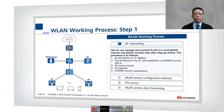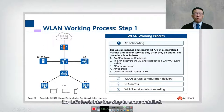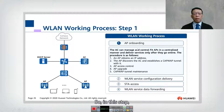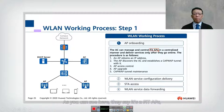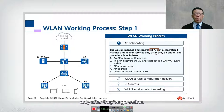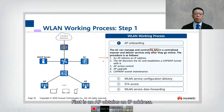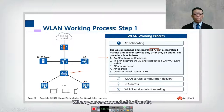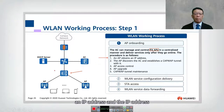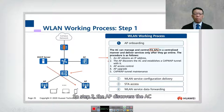Now let's look at the steps in more detail. The first is AP onboarding. In this step, the AC can manage and control a fit AP — meaning the AP is under the centralized control of the AC — and delivers service only after the AP goes online. The first procedure is the AP obtaining an IP address. When connected via a PoE switch, the AP goes online and looks for an IP address provided by the DHCP server.